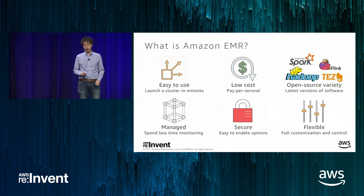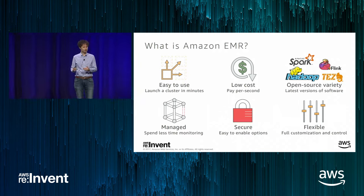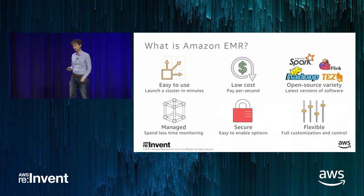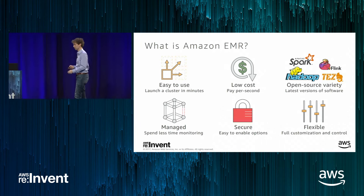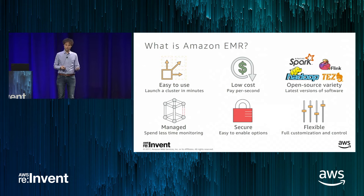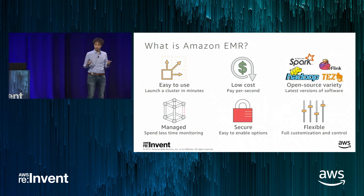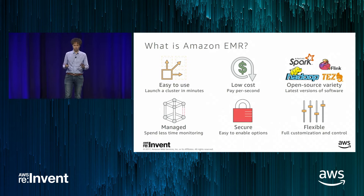We have a new release around every four to six weeks, which means the latest versions of open-source projects are available in EMR quickly. That's important because every new version of Spark has critical bug fixes and new functionality. We currently support 19 open-source projects with EMR 5.10, including MXNet. It's fully managed — we replace nodes and auto-scale your cluster. It's also flexible: you can take all defaults or change everything, install custom components, and even use a custom Amazon Linux AMI.